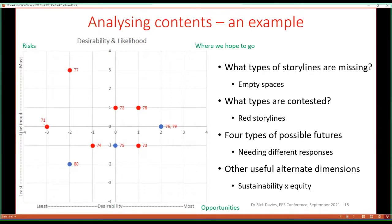This scatter plot shows people's judgments about the likelihood and desirability of storylines, and forms the basis of a discussion about what types of storylines are missing. For example, there are not many in the desirable and likely quadrant — why is that? The red dots are storylines where judgments about probability and desirability were conflicting, and there's a need for discussion. Things which are most likely but undesirable are risks that need to be thought about. Things which are most desirable but less likely are opportunities that need to be thought about.